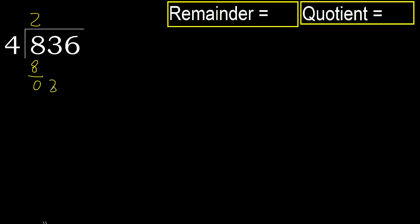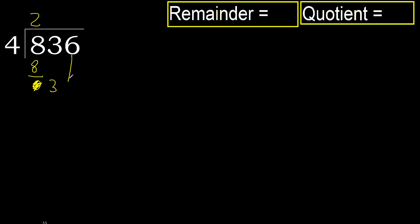Next, bring down. Eliminate the 0, bring down 3. Since 3 is less than 4, move to the next digit, giving us 36.